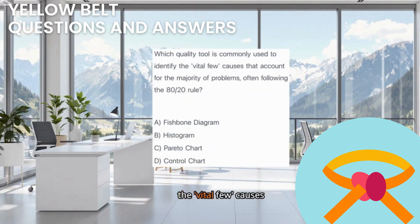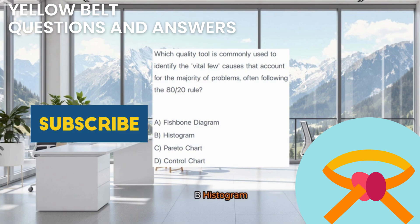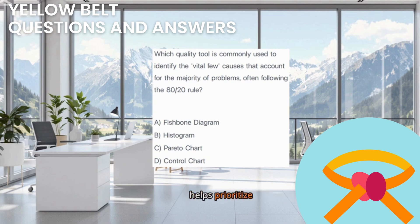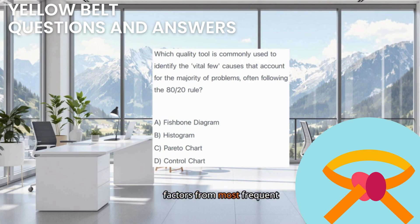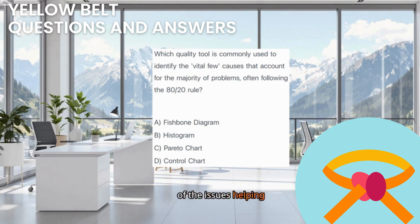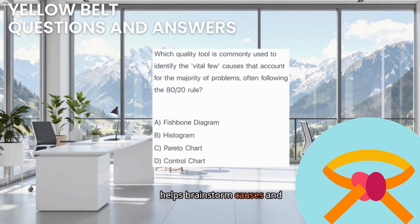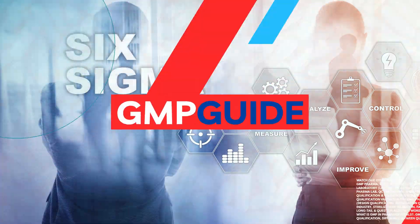Which quality tool is commonly used to identify the vital few causes that account for the majority of problems, often following the 80-20 rule? A. Fishbone Diagram. B. Histogram. C. Pareto Chart. D. Control Chart. Think about which tool helps prioritize. The correct answer is C. Pareto Chart. A Pareto Chart is specifically designed for this purpose — it's a bar chart that ranks causes or factors from most frequent to least frequent, combined with a cumulative percentage line. This visual format makes it easy to see which factors, the vital few, are responsible for the bulk of the issues, helping teams focus their improvement efforts effectively. This directly applies the Pareto principle, or the 80-20 rule. While a fishbone diagram helps brainstorm causes and a histogram shows data distribution, only the Pareto Chart prioritizes causes by frequency. Using Pareto Charts helps focus on what matters most.